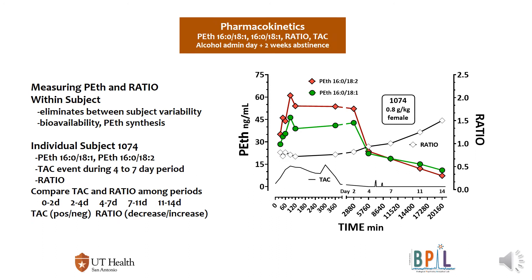These are data from an individual subject, which is what we'll use in the contingency management study. Subject 1074 was a female who received 0.8 grams per kilogram. The 18:1 homolog goes up and comes down during the 14-day period. The 18:2 homolog goes up with a much greater area under the curve than 18:1, but then during the 14-day abstinence period it goes down at a faster rate, consistent with an increase in the ratio, which is seen in the tracing of the white diamonds.